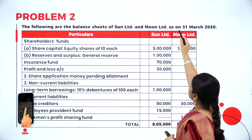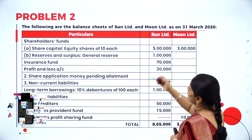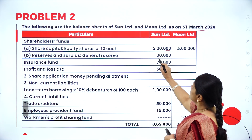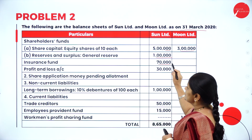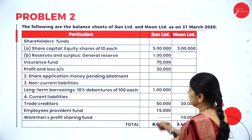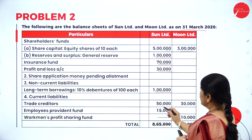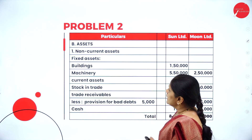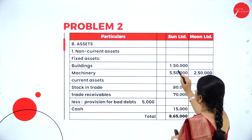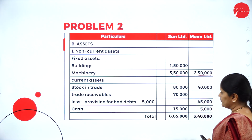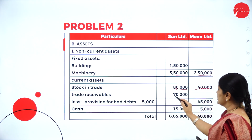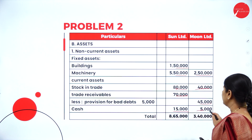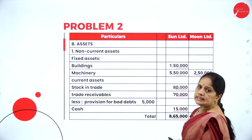Here are the balance sheets of Sun Limited and Moon Limited as on 31st March 2020. Shareholders fund share capital 5 lakhs for Sun Limited, 3 lakhs for Moon Limited. Reserves and surplus: general reserve 1 lakh, insurance fund 70,000, profit and loss account 30,000. Long-term borrowings 1 lakh. Trade creditors 50,000 and 30,000. EPF 15,000, workman profit sharing fund 10,000. Assets: buildings 1,50,000; machinery 5,50,000 and 2,50,000; stock in trade 80,000 and 40,000; trade receivable 70,000 and 45,000 after provision for bad debts; cash 15,000 and 5,000. Totals: 8,65,000 and 3,40,000.